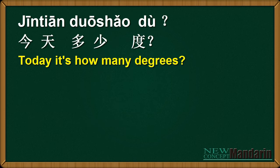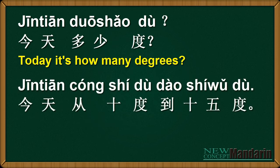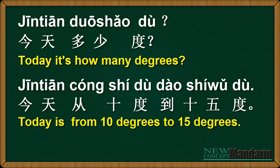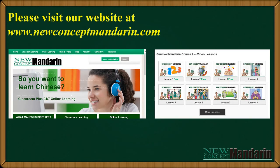今天多少度? 今天从十度到十五度? Today is from 10 to 15 degrees. You can omit the word 从, just say 十度到十五度。